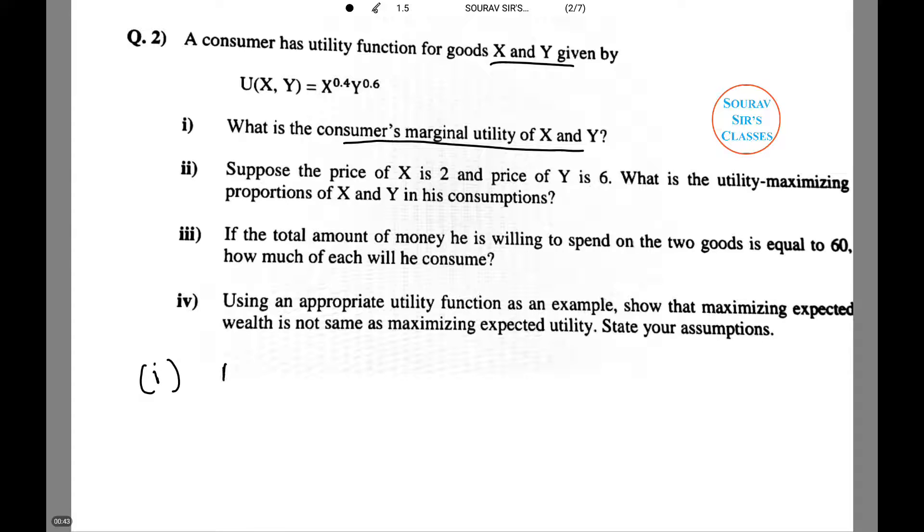The marginal utility of X, MU_X, equals del U(X,Y) by del X - that is, we are partially differentiating this. So this comes to 0.4 X to the power -0.6 Y to the power 0.6.